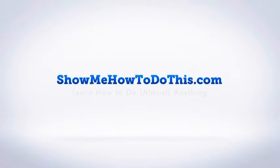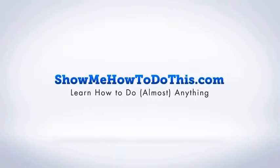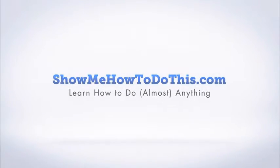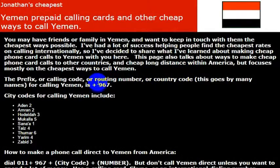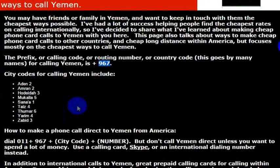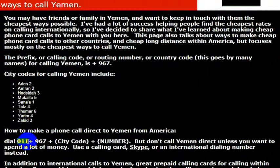To call Yemen, if you need to call friends or family there, or if you're making travel arrangements to go to Yemen, you will need to know the country code for the country, which is 967. And if you're dialing from the United States, then you need to know the outbound international dialing code, which is 011.